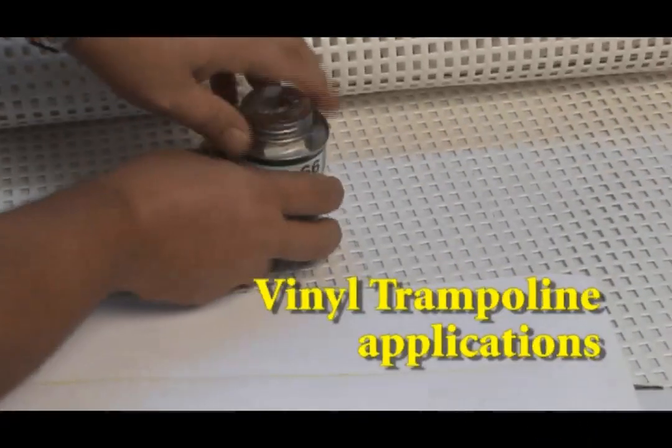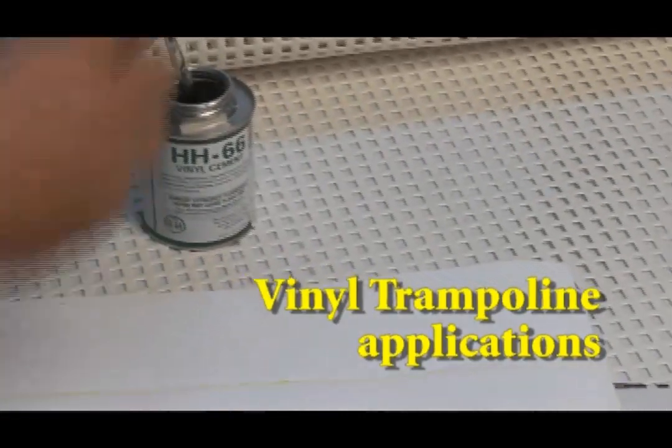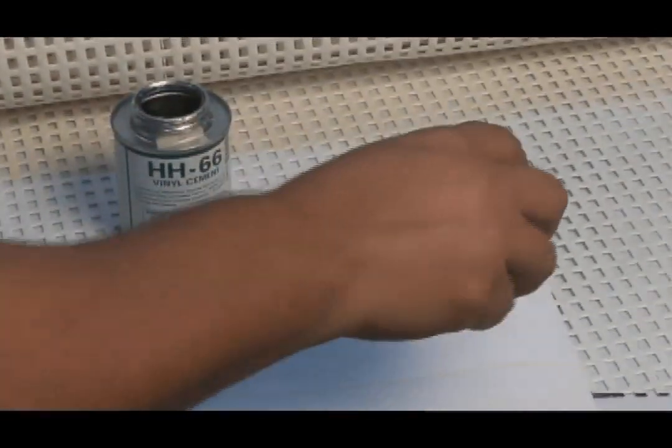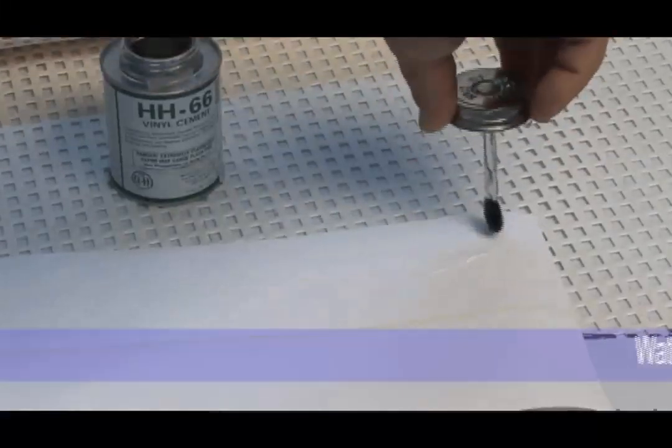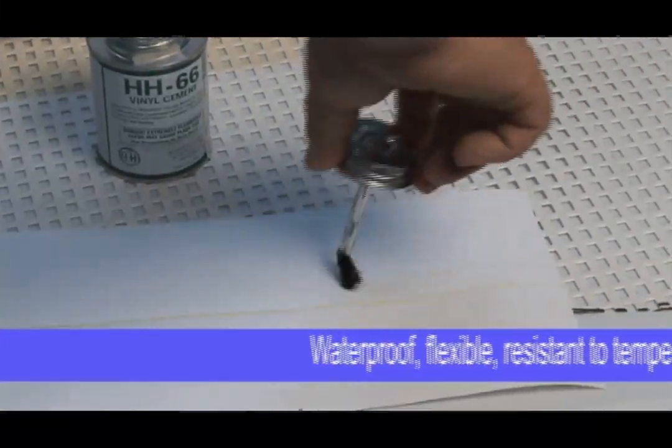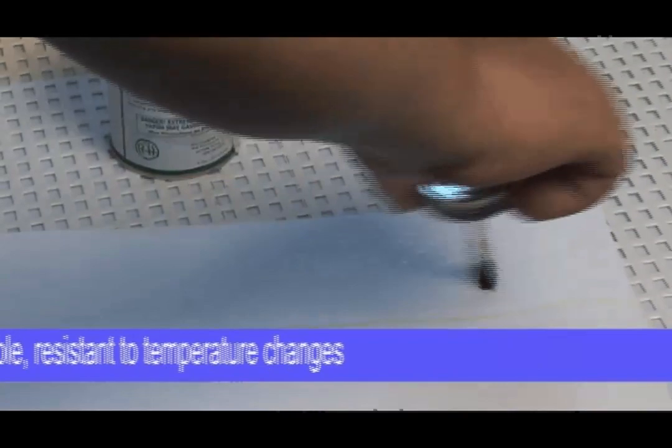In this illustration, we're going to use HH-66 vinyl cement on this super heavy duty tramp material. We've already cut the facing which is six inches in width and will be folded to three inches for the grommet reinforcement.